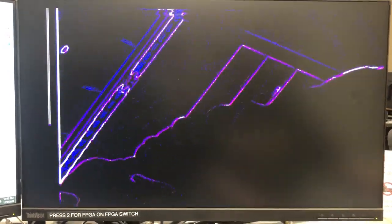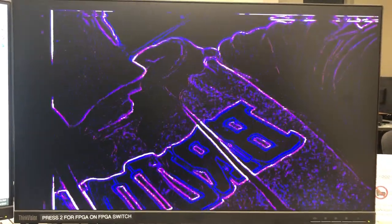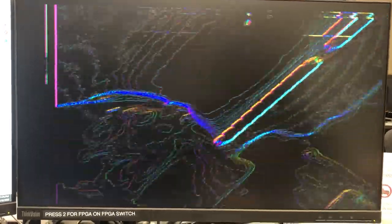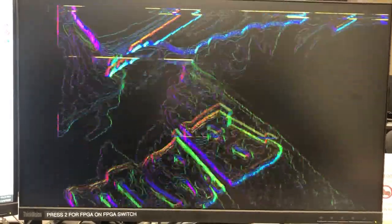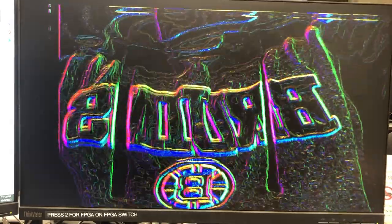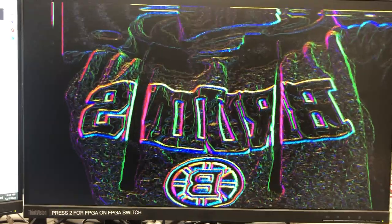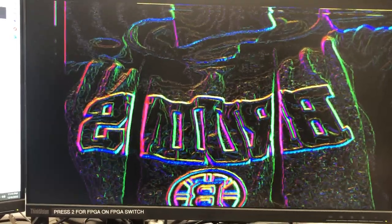This is the edge detection with a Sobel filter. As you can see here is edge detection with the Sobel filter along with the edge direction. So you can see different directions of edges have different colors. Like horizontal edges are yellow or blue depending on if it's going from light to dark or dark to light.